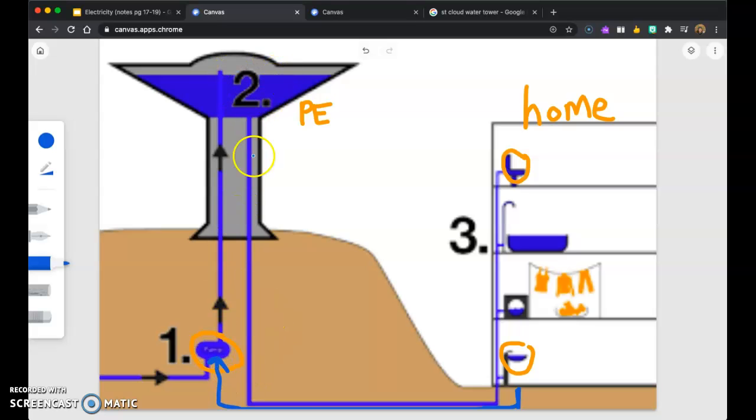So this is a closed circuit. It will just keep revolving as long as the water can be cleaned, pumped up through the water tower, and used in your house.